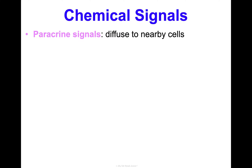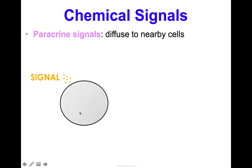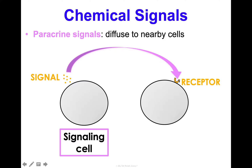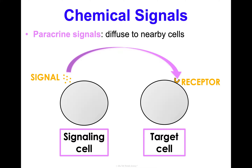Another type of chemical signal is a paracrine signal — this is when a signal diffuses to a nearby cell, so it's not going to go very far. We have our signaling cell or secreting cell, it's going to secrete the signal and it's just going to go to another cell that's nearby. That's going to be our target cell with our receptor protein. Paracrine signals are how electrical signals and neurotransmitters are conducted — from a nerve cell to a muscle cell or to another nearby nerve cell.